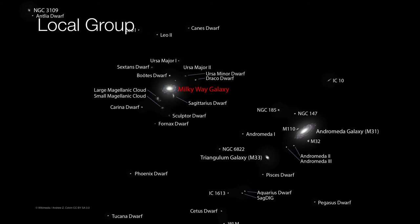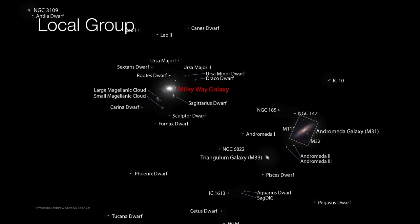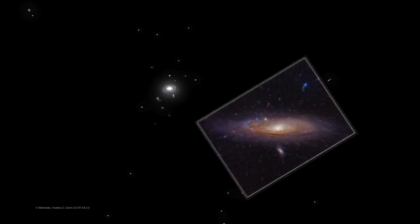Perhaps the largest galaxy in the Local Group is the Andromeda Galaxy. It's at a distance of about 2 times 10 to the 19th kilometers — so now this is two more orders of magnitude.